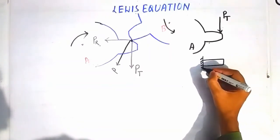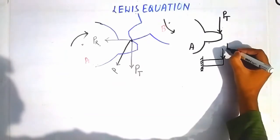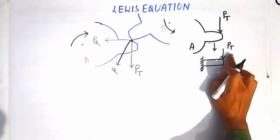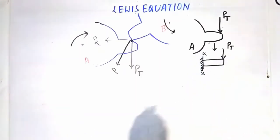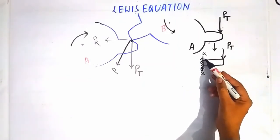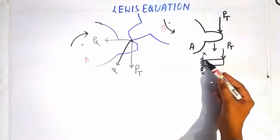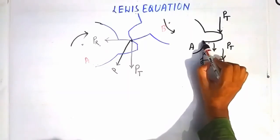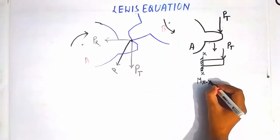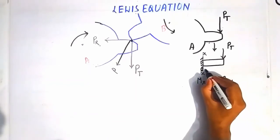This cantilever beam is acted upon by the load PT, and section XX is the weakest section of this cantilever beam. Therefore, the moment at section XX is maximum, and hence the bending stresses will be maximum at this section XX. It will be the critical section — the tooth will break from here when bending stresses are high.